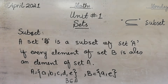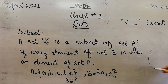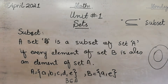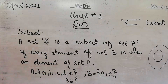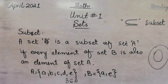So subset means: you have some given set, and from it you take out a smaller set from inside it — you pick any two, one, or three elements and make a separate set. That set is known as a subset.